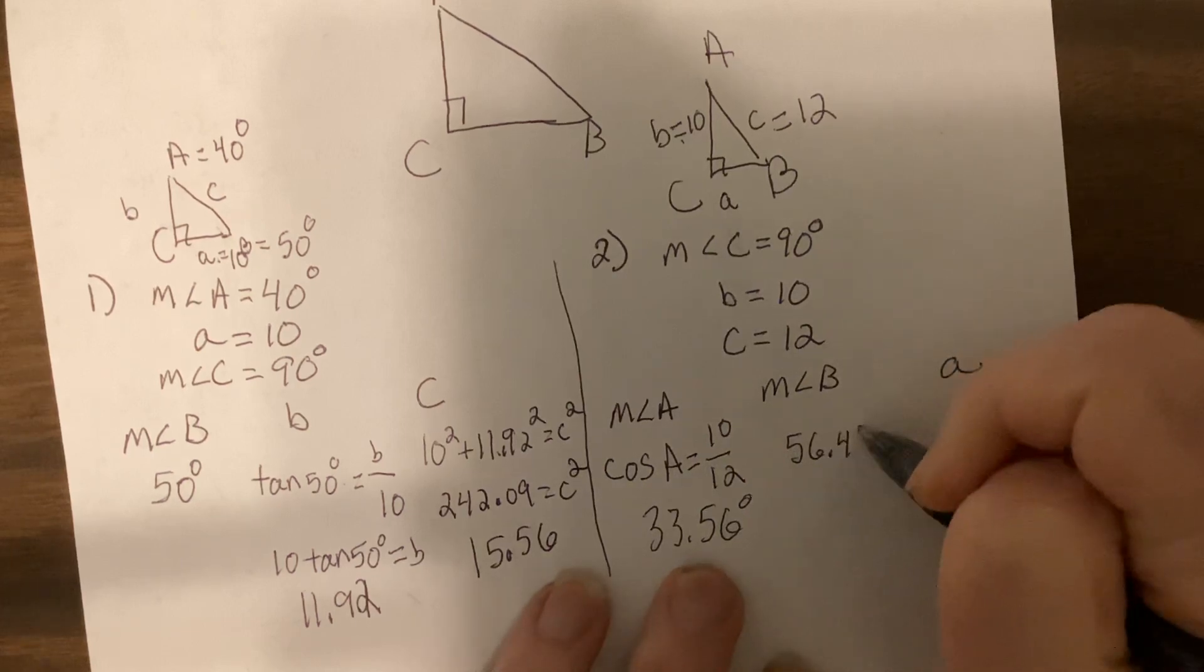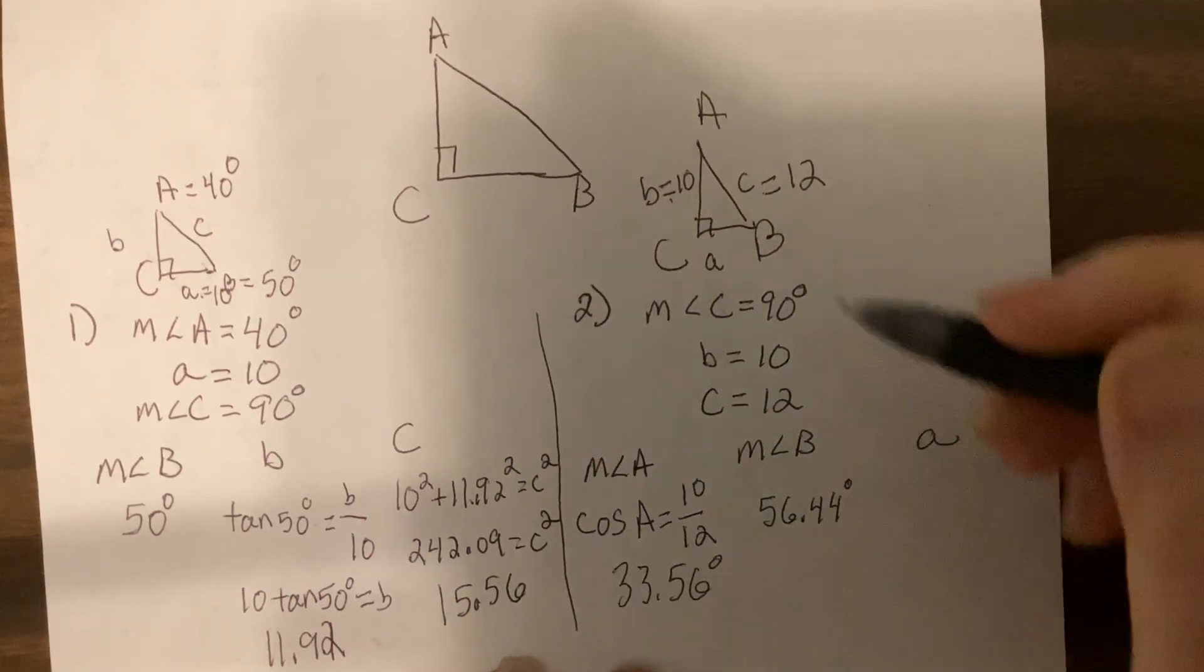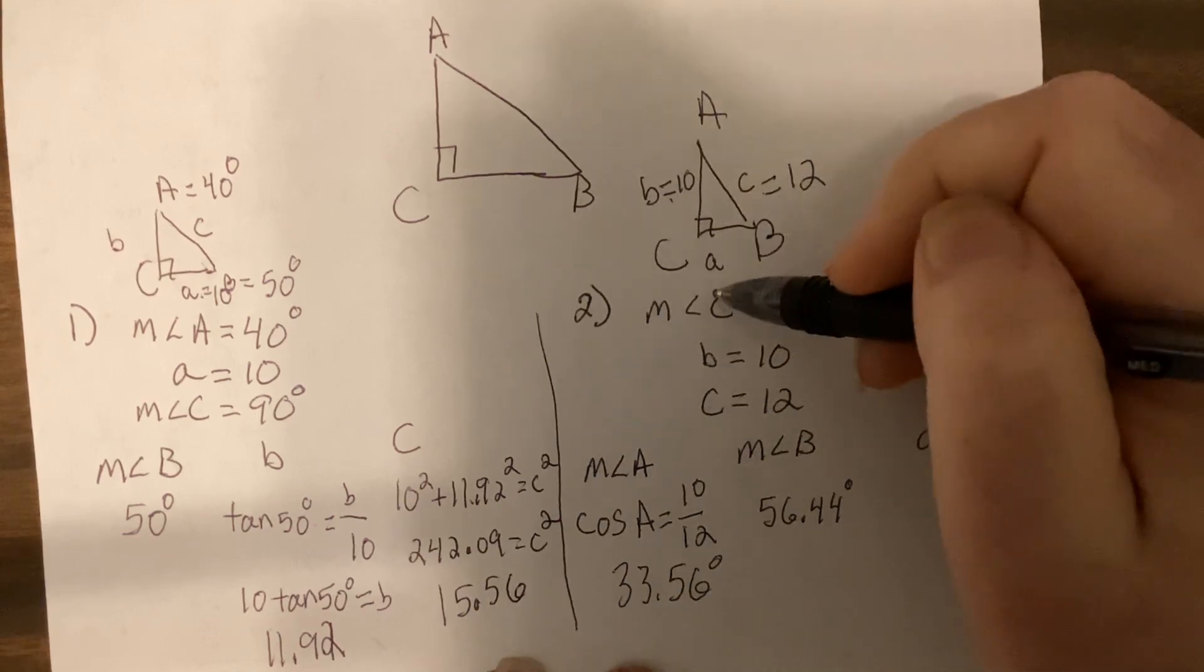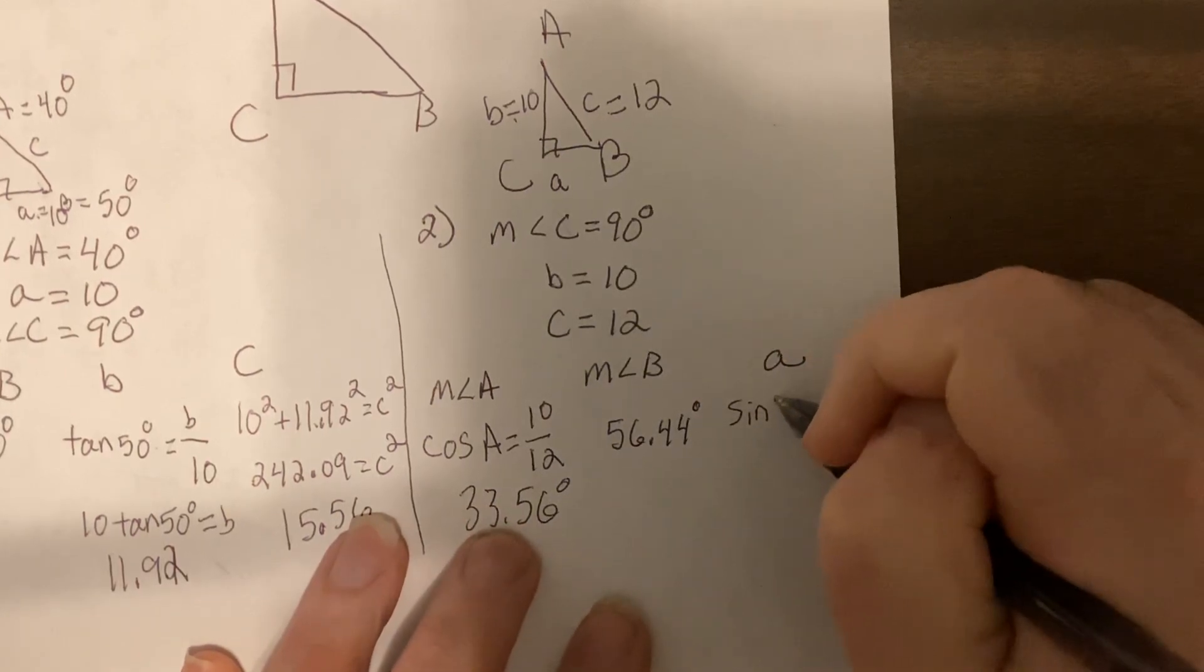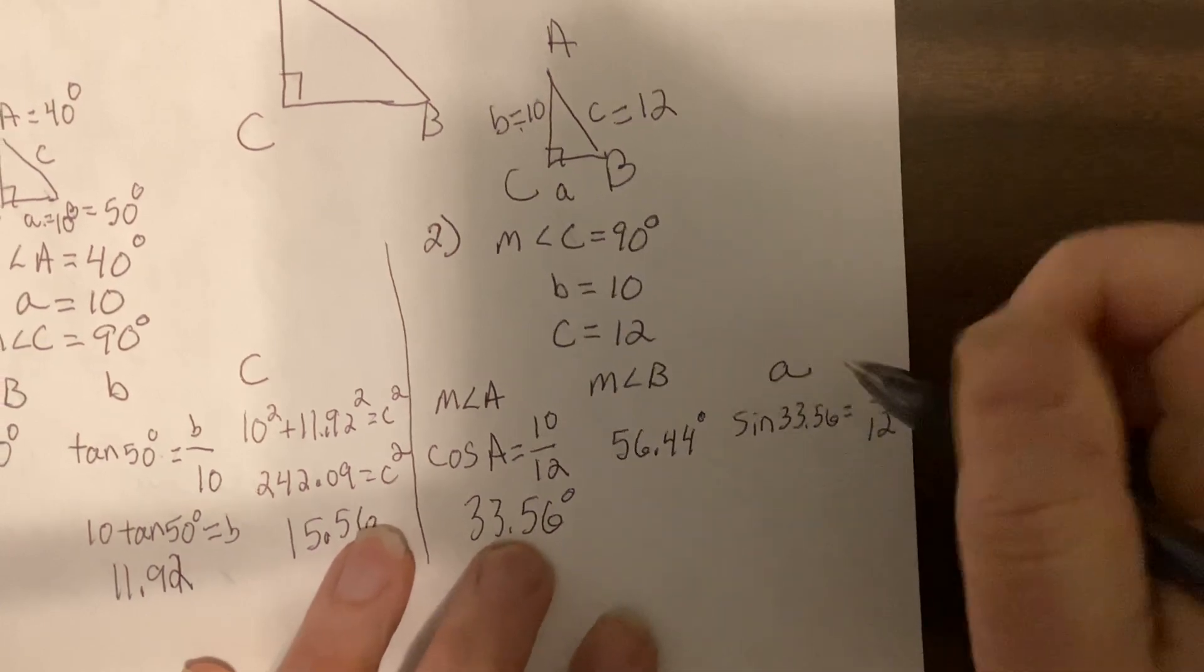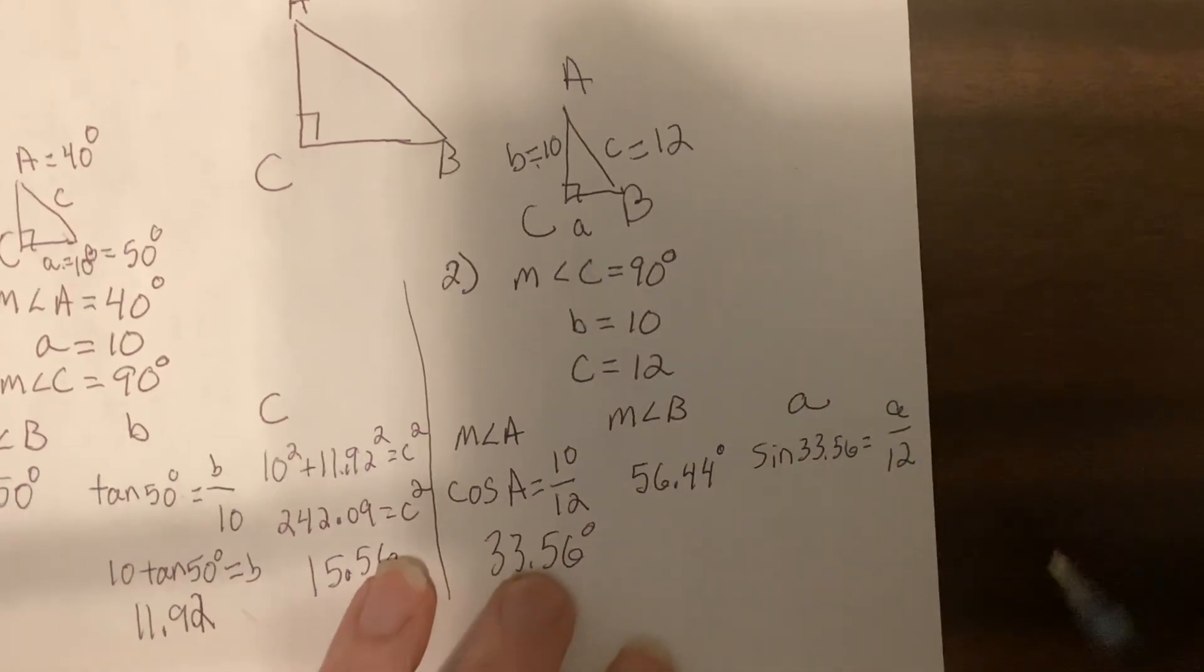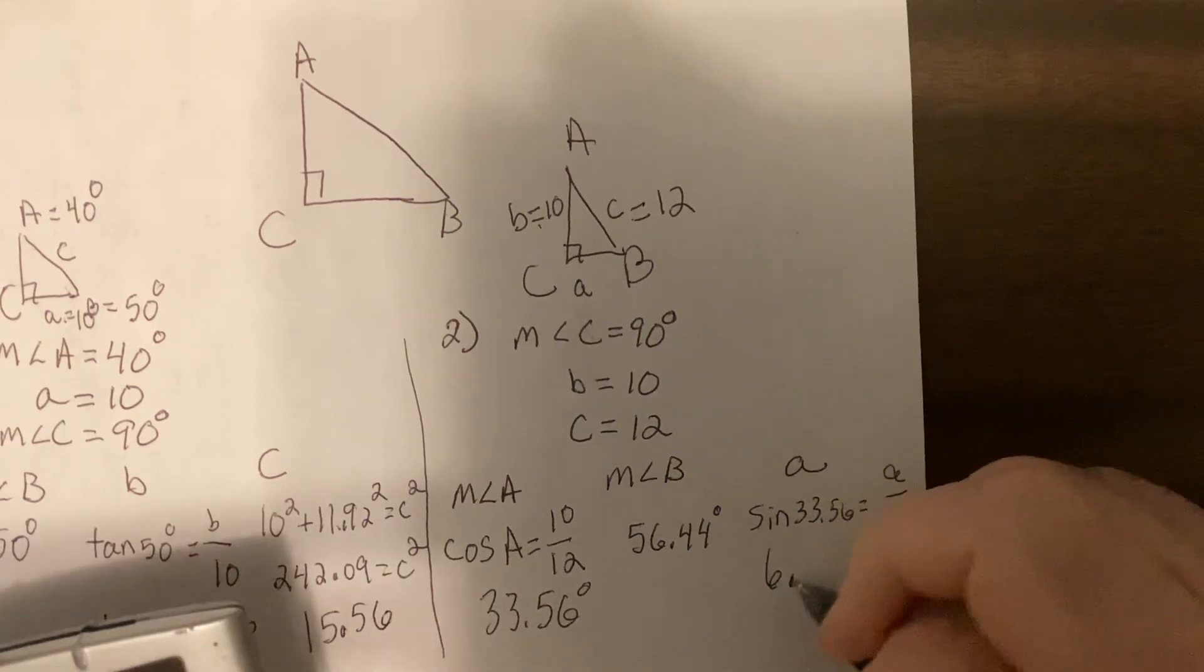90 minus that would be 56.44. Then side a, I'm going to go sine of angle A is a over 12, so sine 33.56 is a over c because sine is opposite over hypotenuse. Cross multiply, so I get 12 times sine 33.56, and I get 6.63.